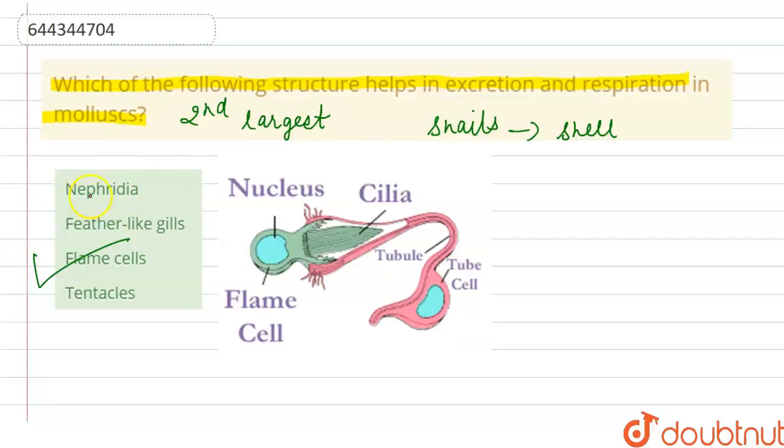Nephridia is the characteristic feature in the case of annelids, phylum Annelida, like earthworms. It helps in excretion there.